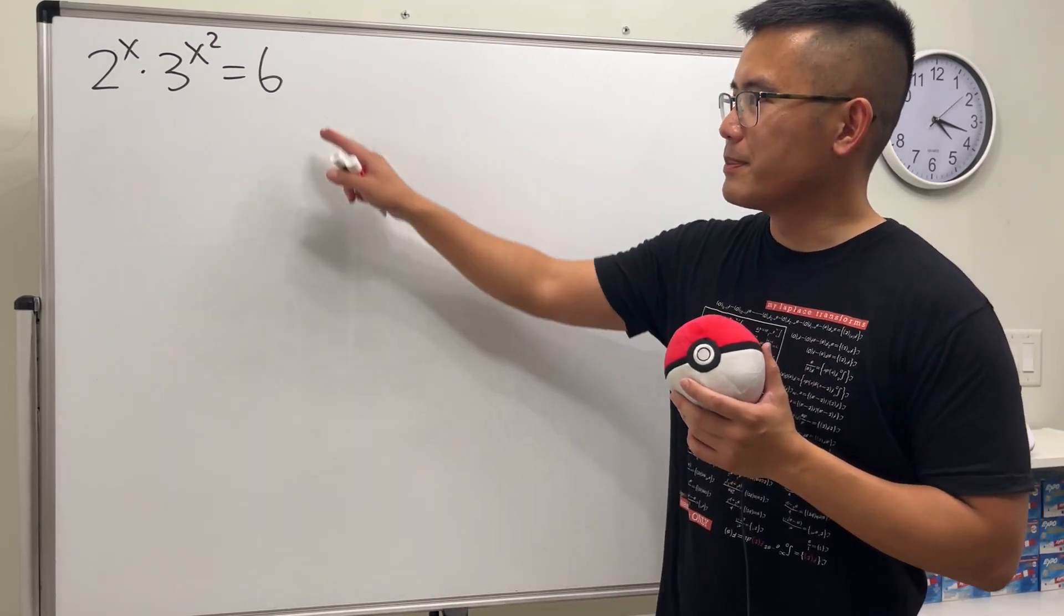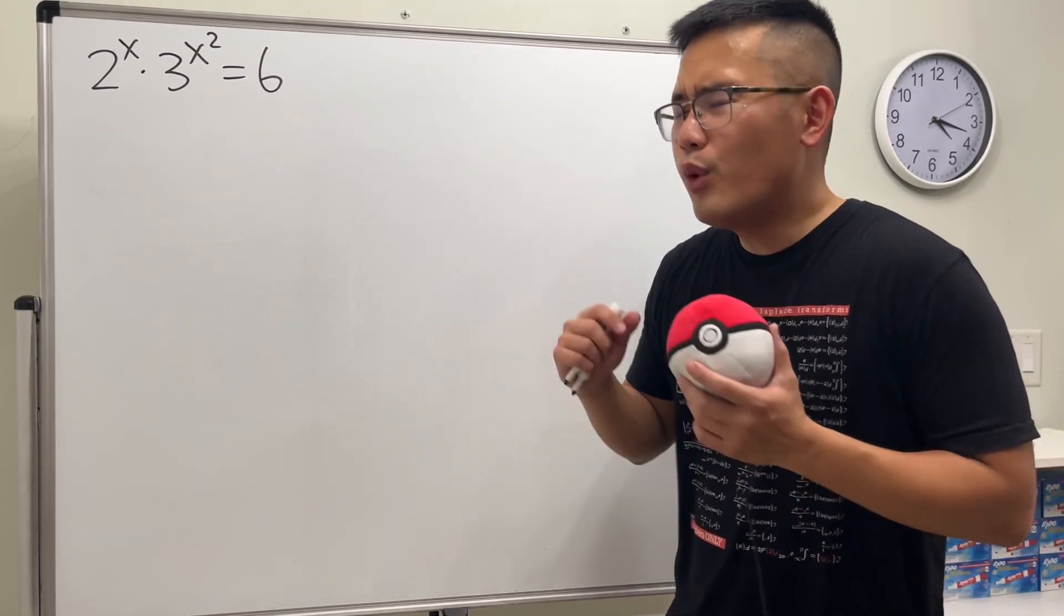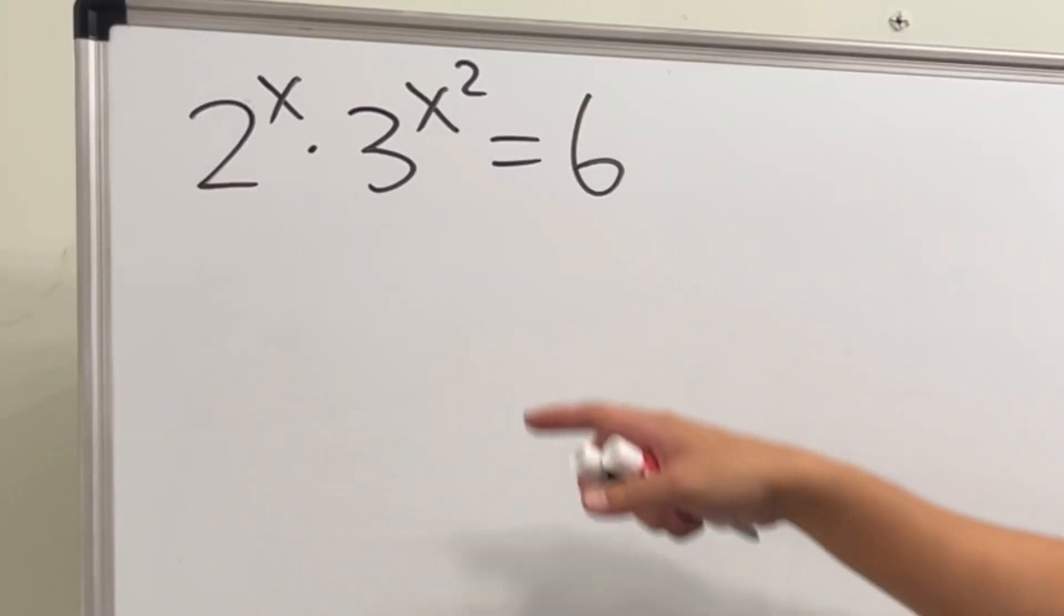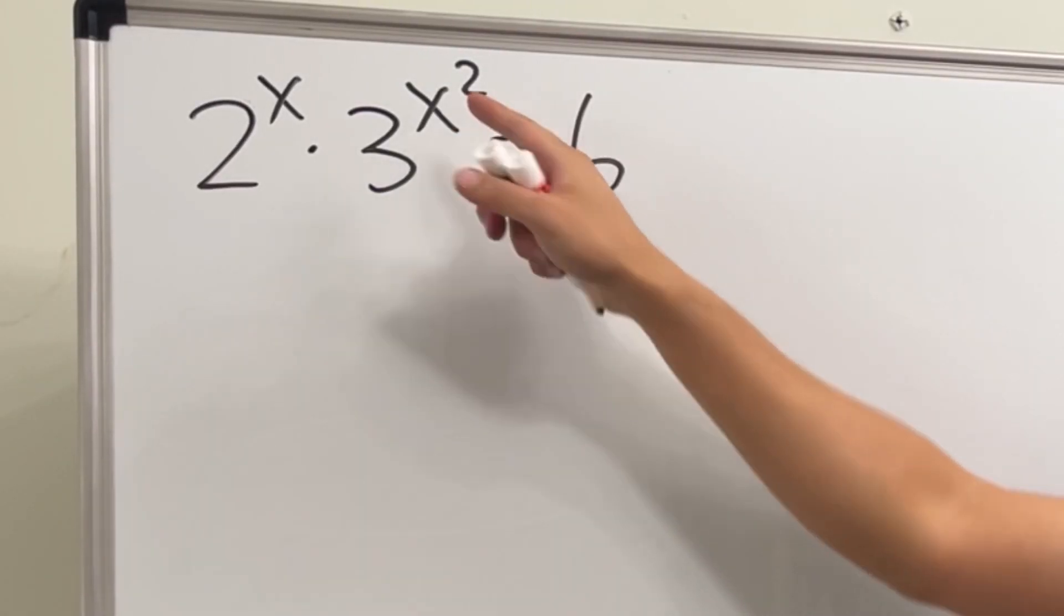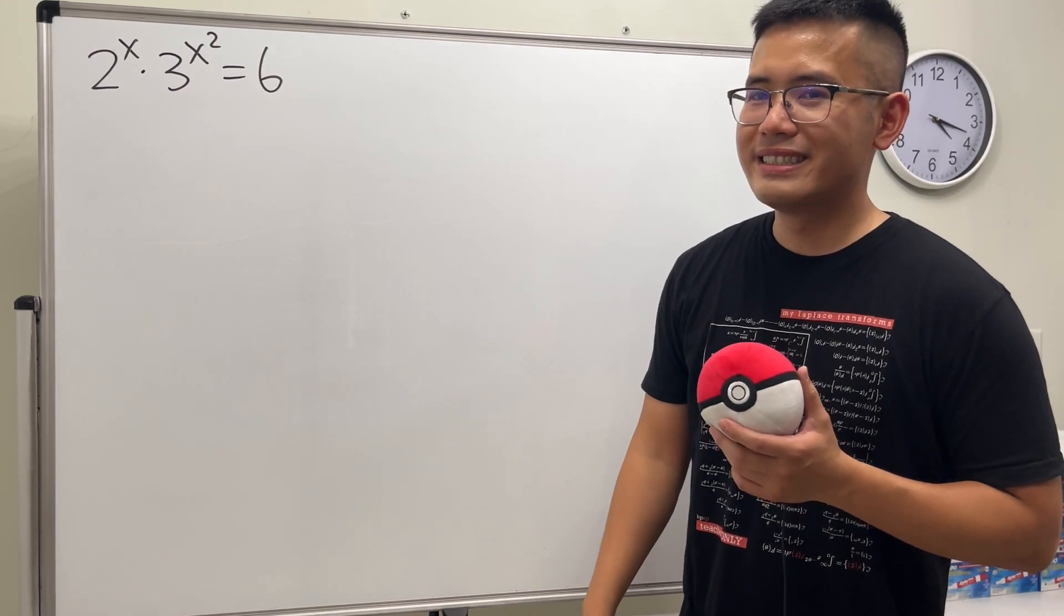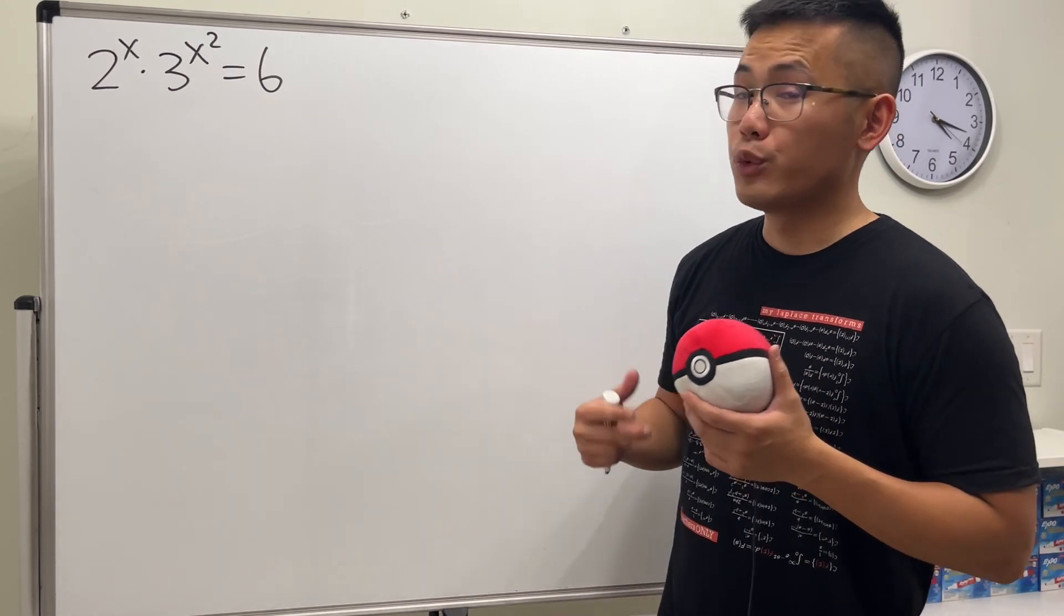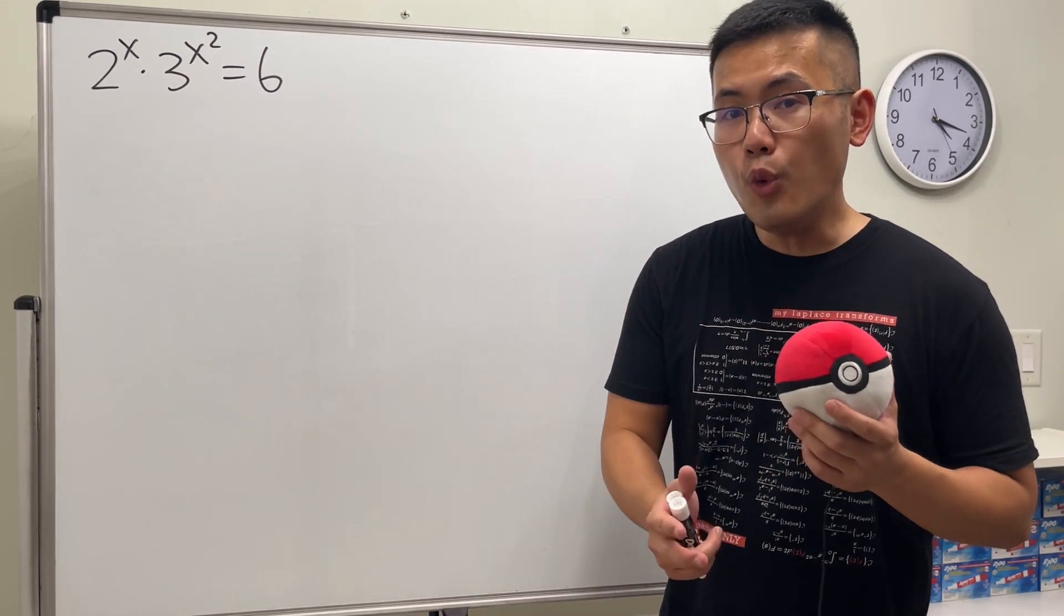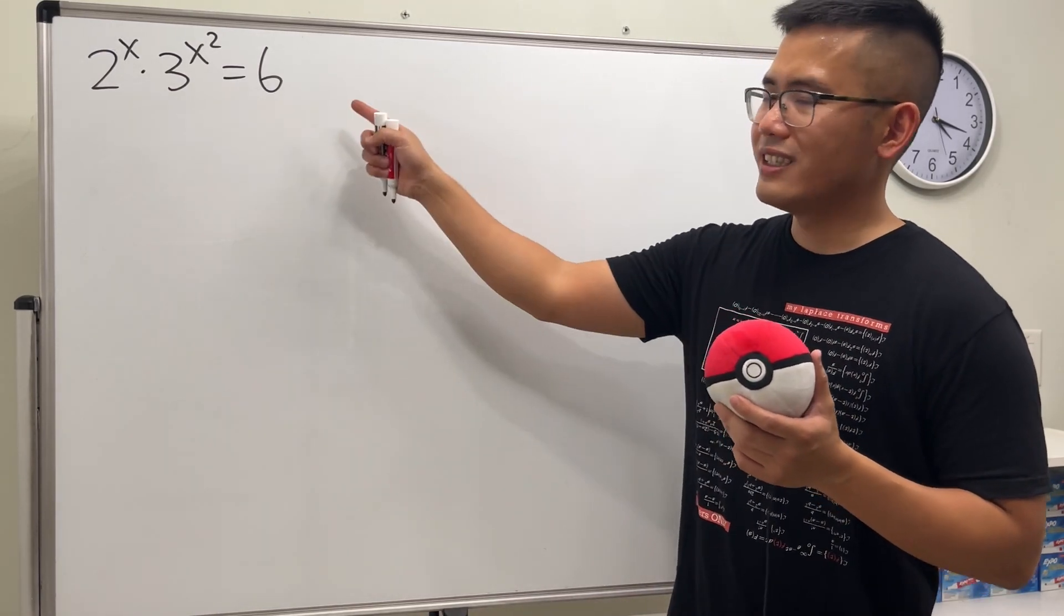Alright, so here I created an exponential equation for you guys. Of course we have different bases, and just to make this more interesting I also made this exponent x squared so we have a quadratic part. I know x equals one is an answer for this, but do we have any other real answers? That's the hard part. So as always, please pause the video and try this first.